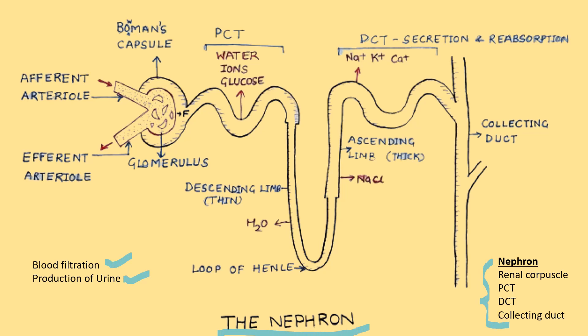The first important structure is the renal capsule, which is the initial site of blood filtration. It consists of the glomerulus, a network of capillaries, and Bowman's capsule, a double-walled cup-shaped structure surrounding the glomerulus.